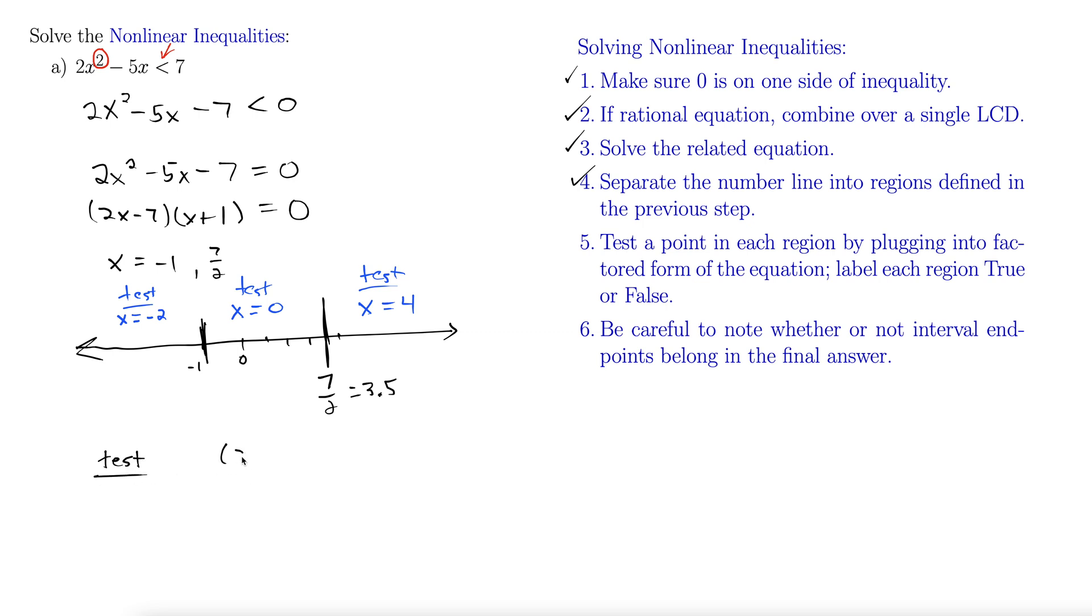Step 5 says test a point in each region by plugging into the factor form of the equation. I like to make a little chart here. Test: 2x minus 7, x plus 1. We don't have to evaluate this completely out to a number. Instead, we just have to know if it's positive or negative. Here we're testing x equals negative 2. If I plugged in negative 2 here, I'd get something negative minus 7, so it's a negative. Negative 2 plus 1 is a negative. Negative times a negative is a positive. Moving on, we test x equals 0. 0 minus 7 is a negative, 0 plus 1 is a positive. Negative times positive is a negative. x equals 4, 2 times 4 is 8 minus 7 is 1, so that's positive. 4 plus 1 is also positive. Positive times positive is positive.